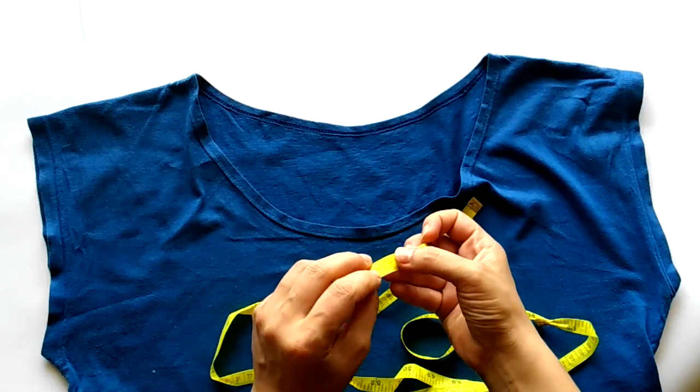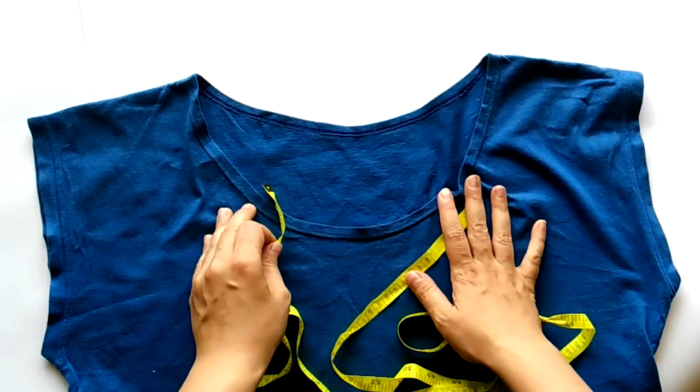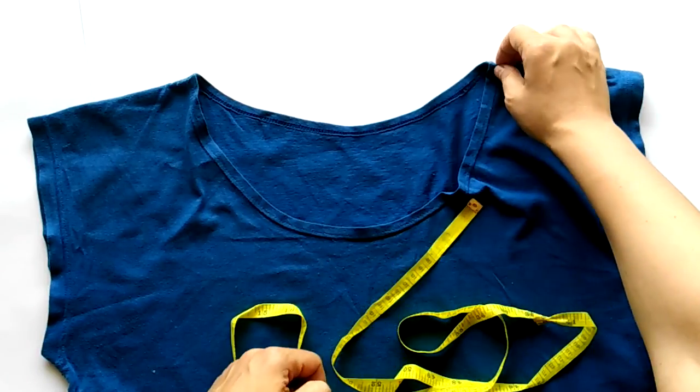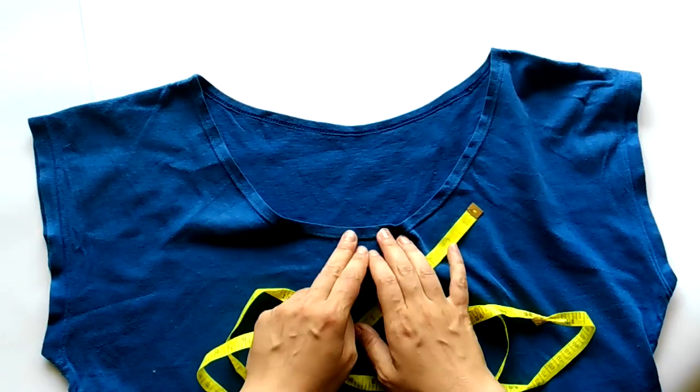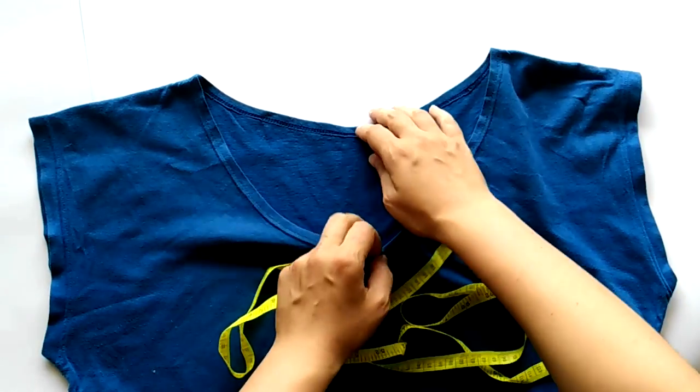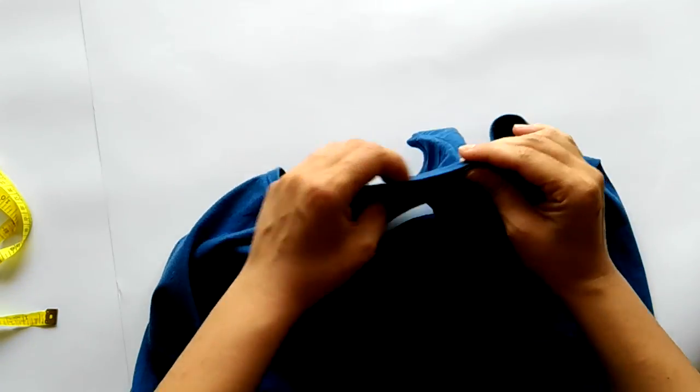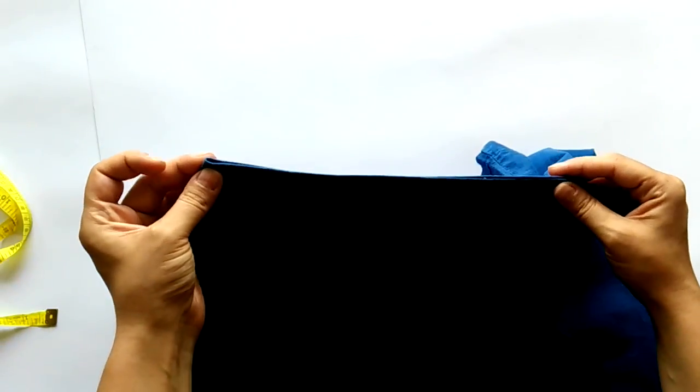I'm going to put the pleats on the sides. The position and depth of the pleats depends only on your preferences and the amount of fabric that needs to be reduced. The only thing that is important is to make them even on both sides. That's why I'm going to start from the shoulder seams and put a pin where I imagine the pleats to be.